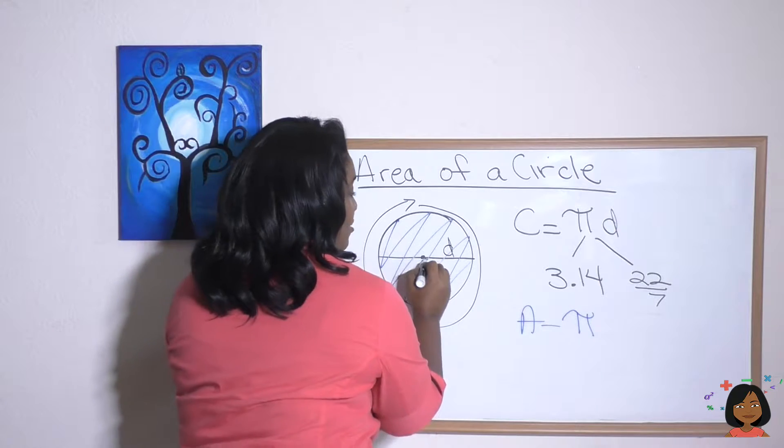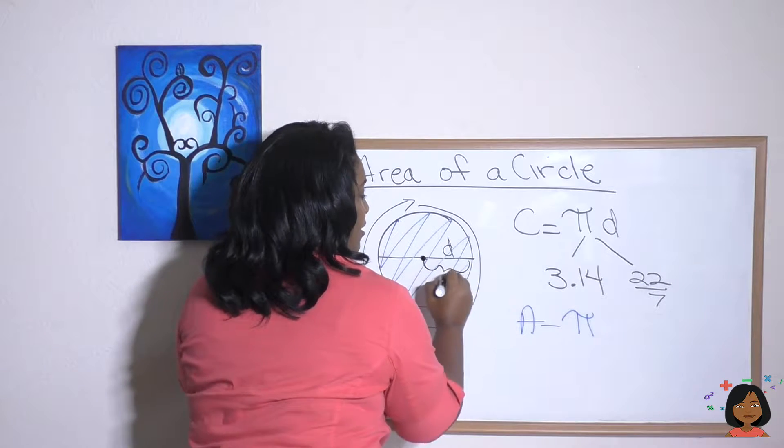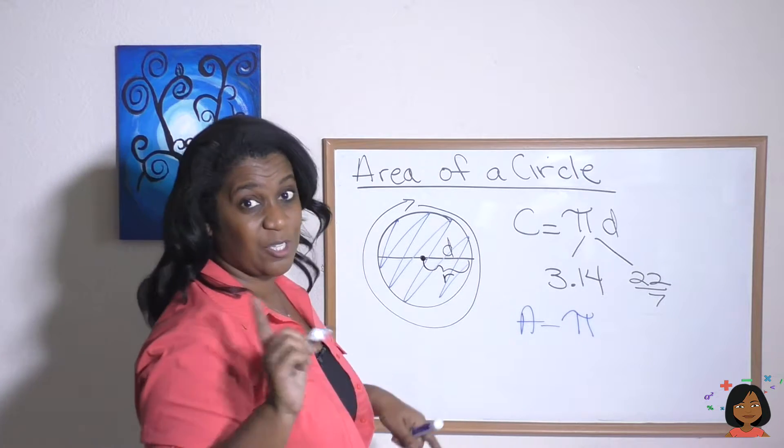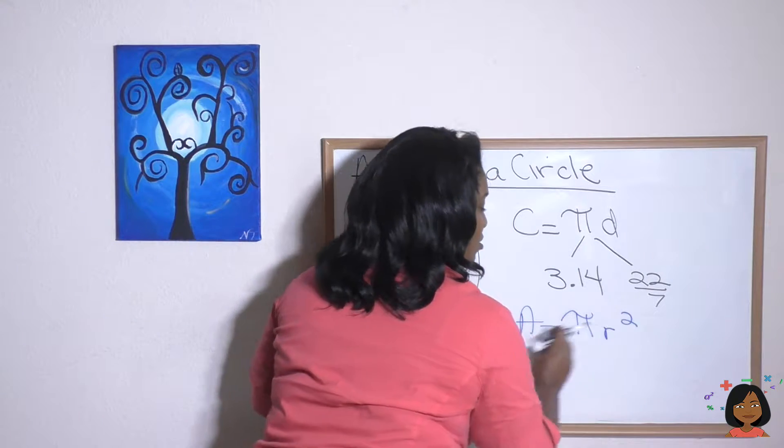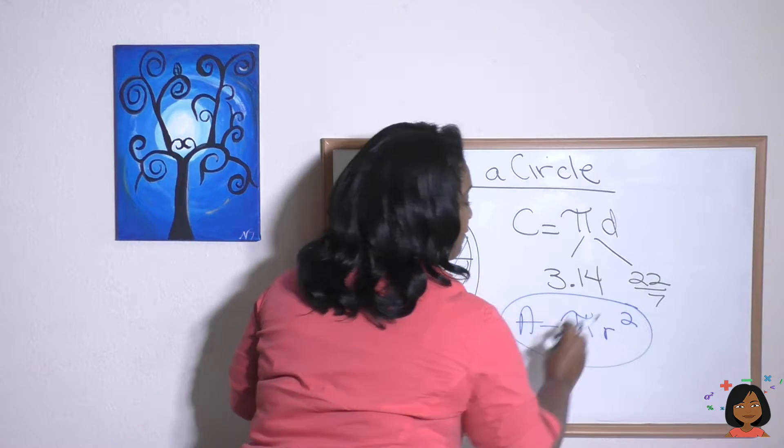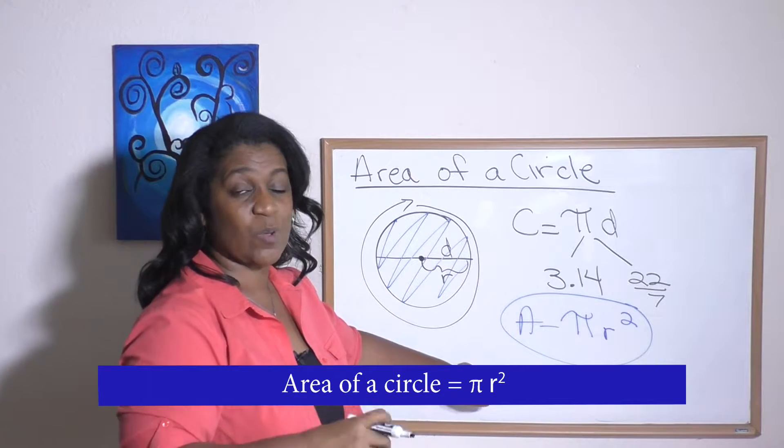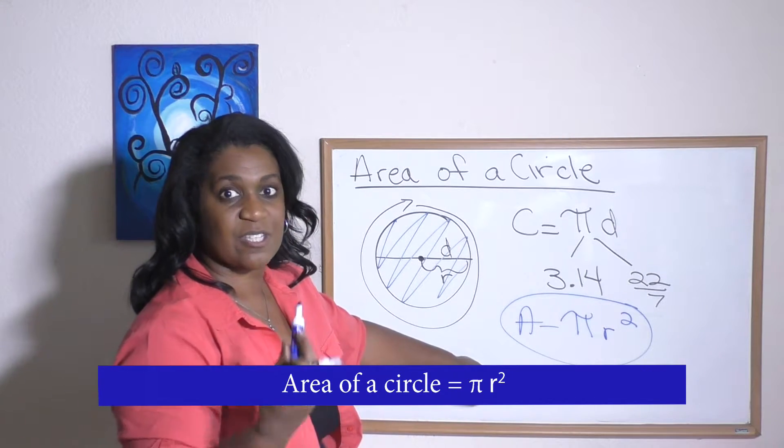Half of that is the radius. From here to here is the radius. So we're going to use the radius, but in this instance, we square it. So it's the radius squared. Area equals pi times radius squared.